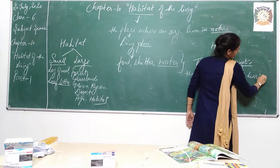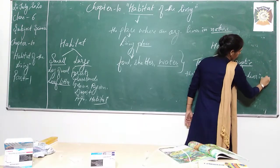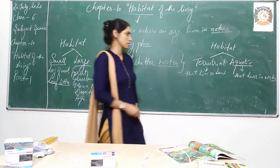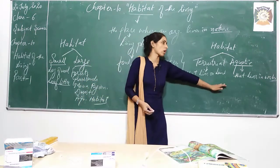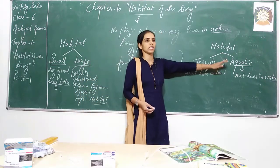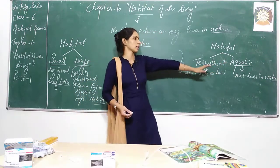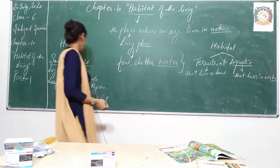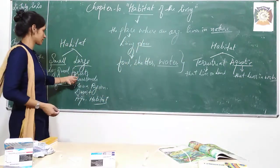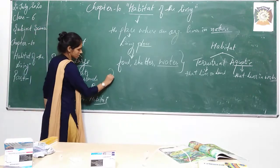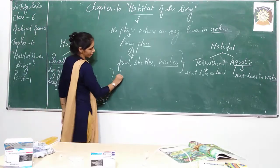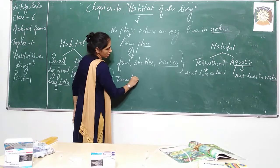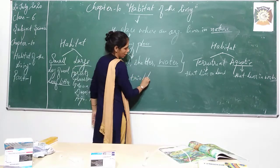Terrestrial habitat is for those organisms that live on land, and aquatic habitat is for those organisms that live in water. The habitat which is on land is called terrestrial habitat and the habitat in water is called aquatic habitat. For example, forest, grassland, and deserts — these are all terrestrial habitats.